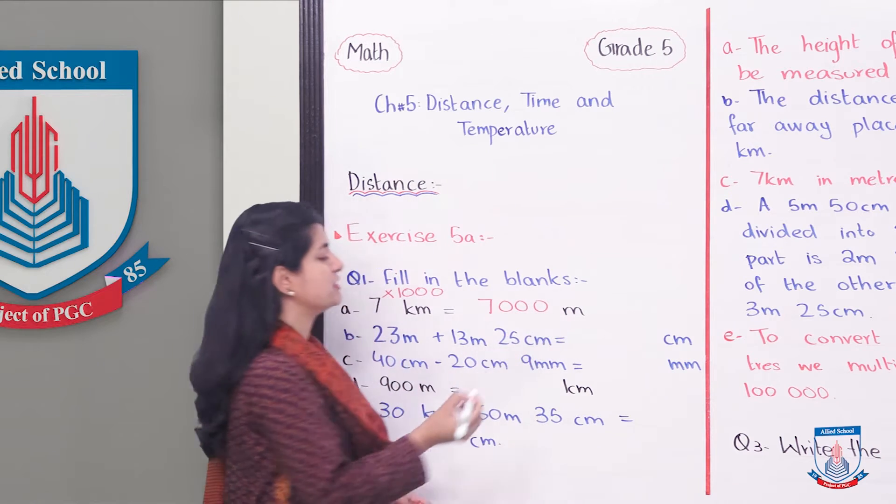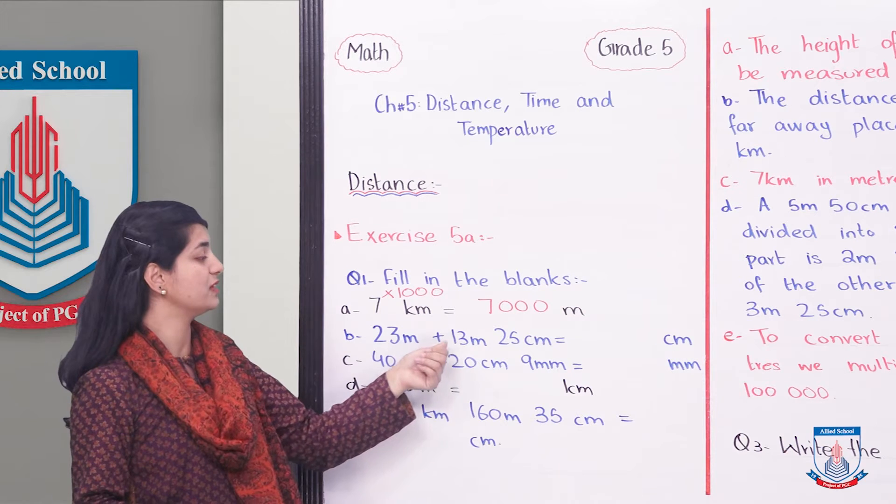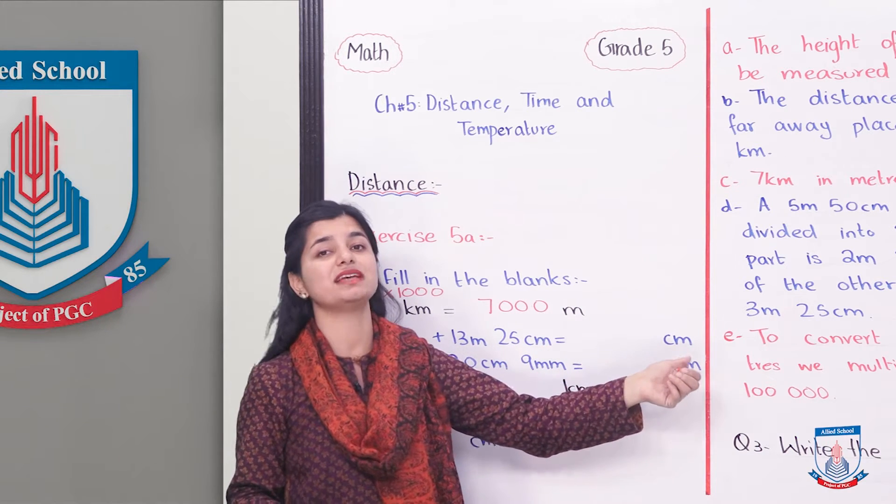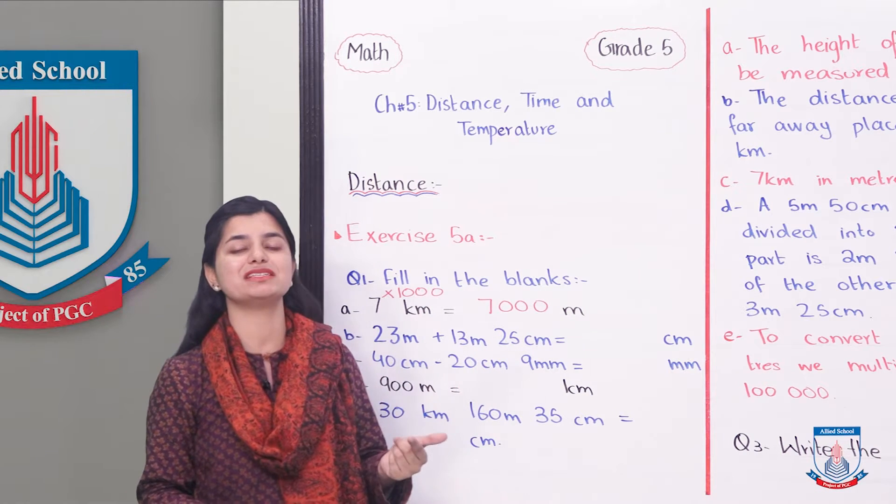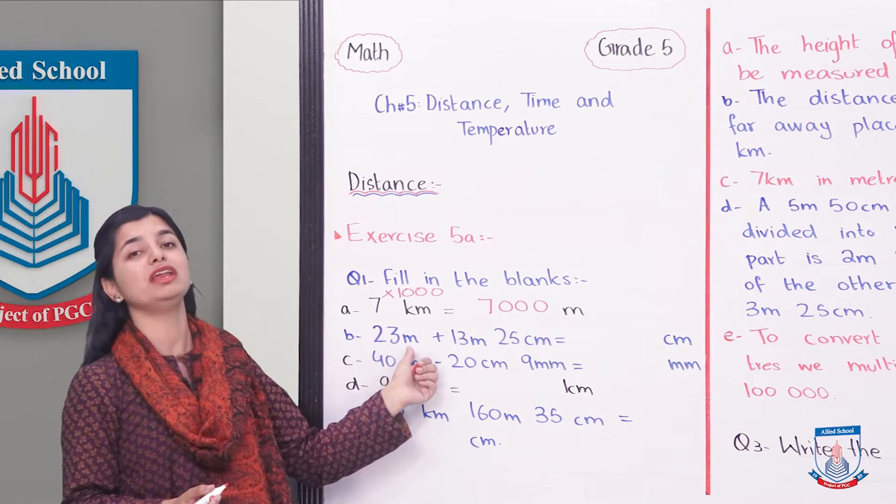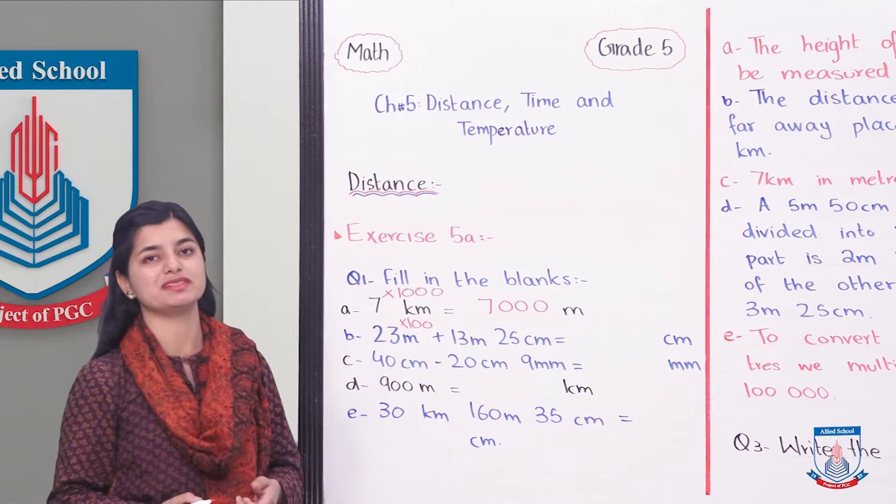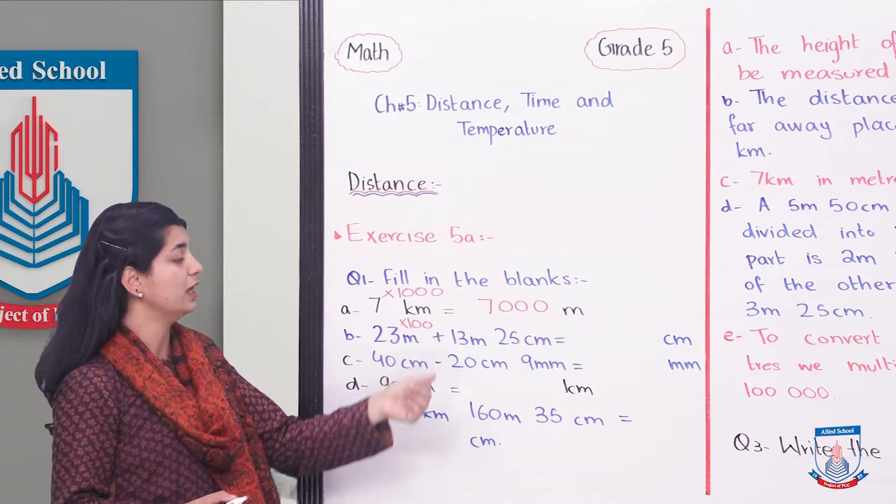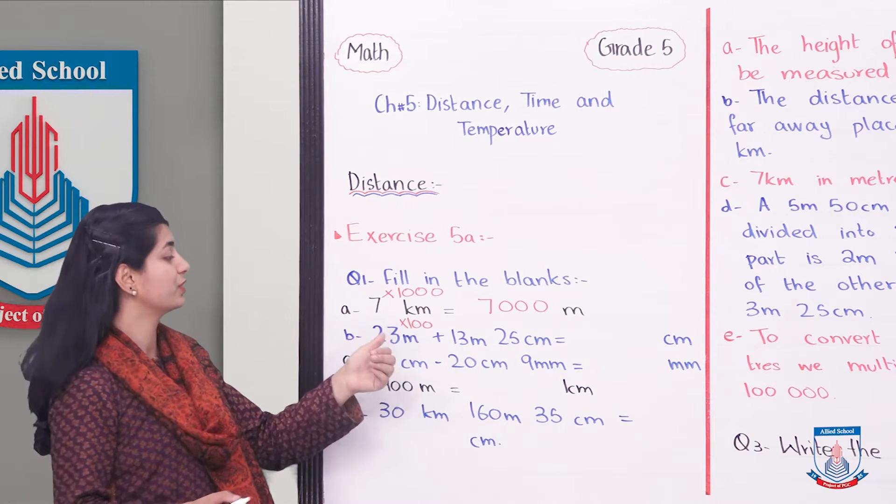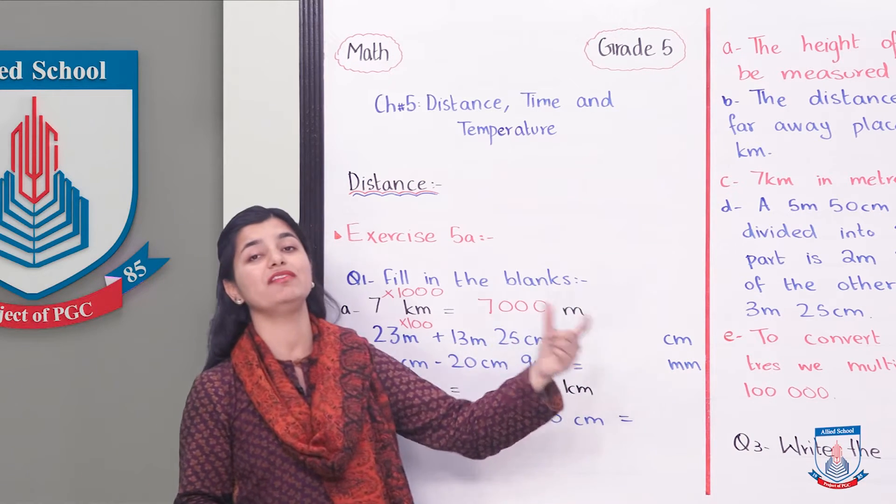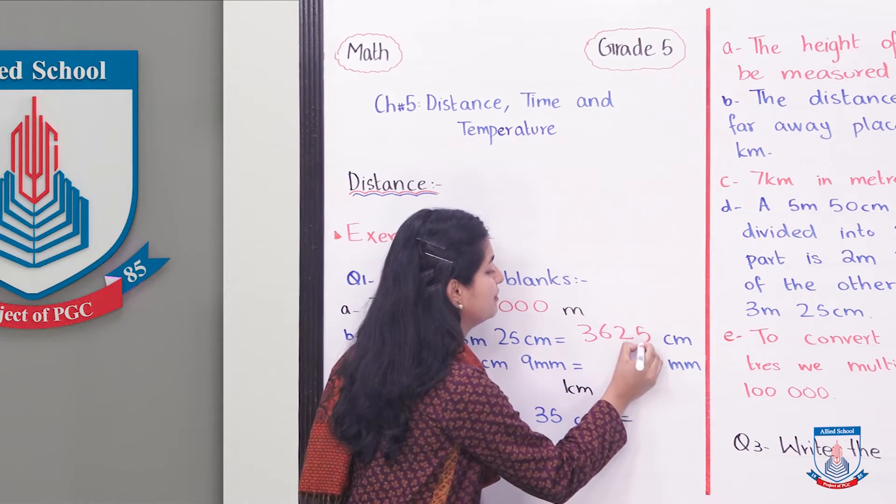Part B is 23 meters plus 13 meters and 25 centimeters in centimeters. You have to convert the whole answer in centimeters and then add. We will multiply 23 meters by 100 so that it can become centimeters. 23 into 100 is 2300, plus 13 into 100 is 1300, plus 25 centimeters. Our answer is 3625 centimeters.